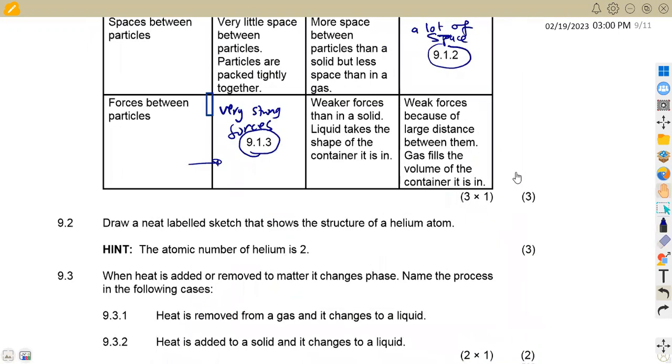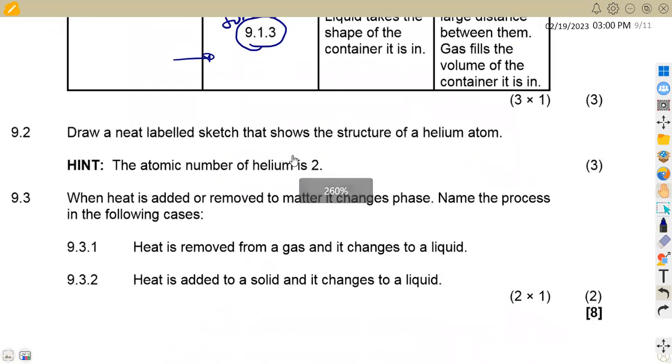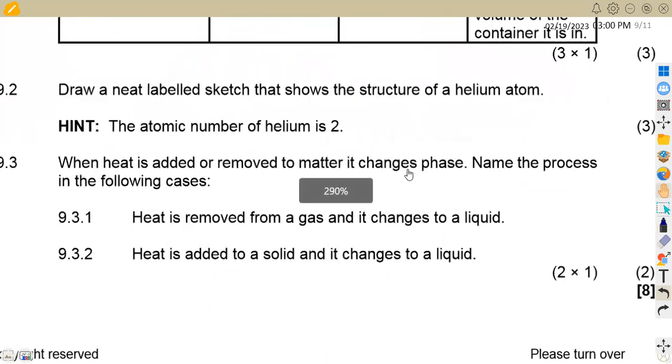On question 9.2, we are given draw a neat labeled sketch that shows the structure of a helium atom. We are given that it's a helium atom, and we are given the hint that a helium atom has atomic number which is two. That means we are supposed to have two electrons and two protons.